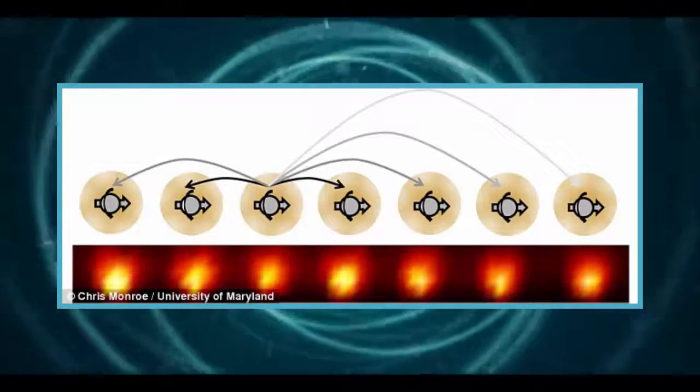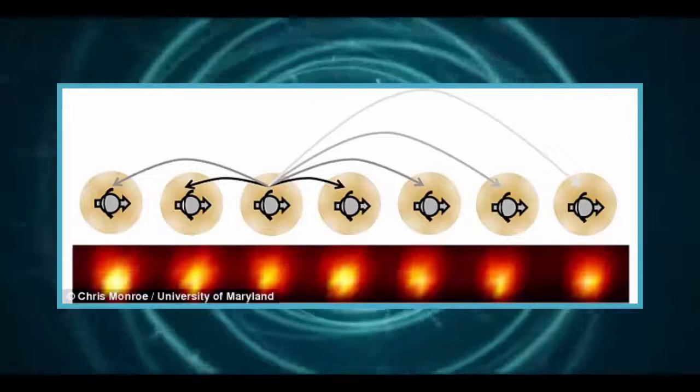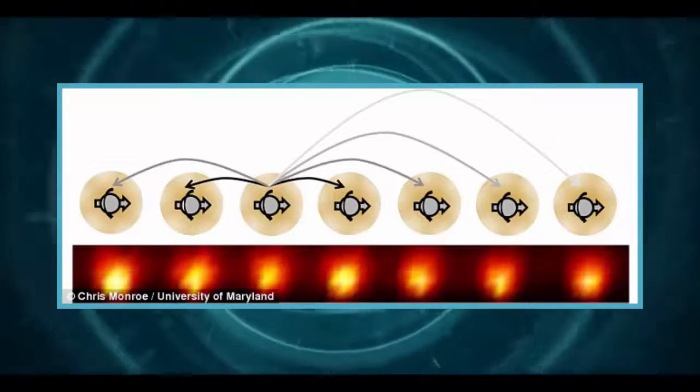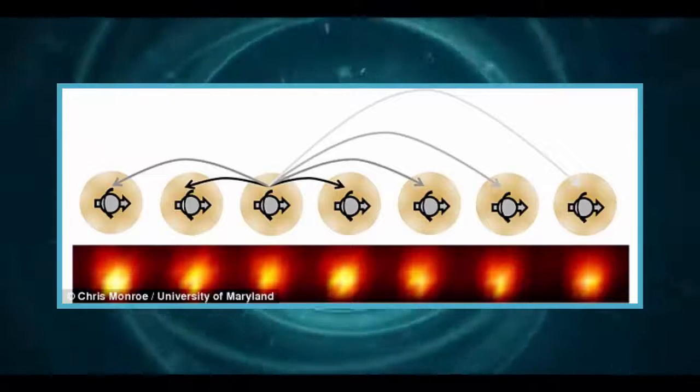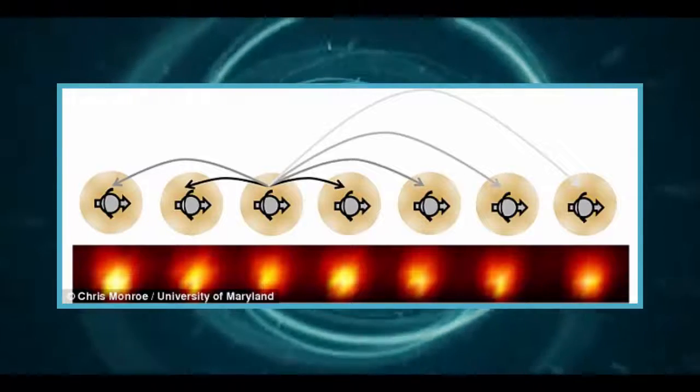The idea of a time crystal was first proposed in 2012 by physicist Frank Wilczek, who suggested a type of matter that can break translational symmetry in time. With a recent breakthrough, physicists now say the new form of matter has implications for the future of quantum computing.